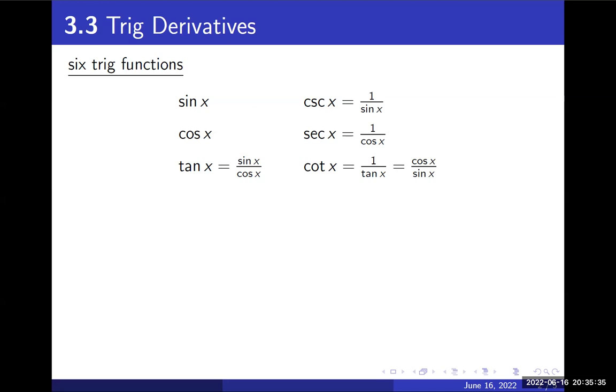Cosecant x, secant x, and cotangent of x. Everything relates back to sine and cosine. Tangent of x is sine x over cosine x. Cosecant and secant are the reciprocals of sine and cosine, and cotangent is the reciprocal of tangent.